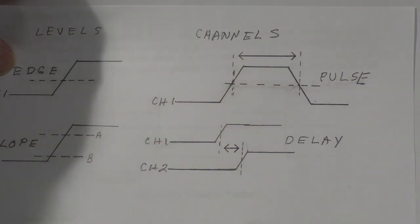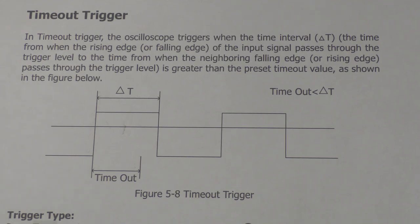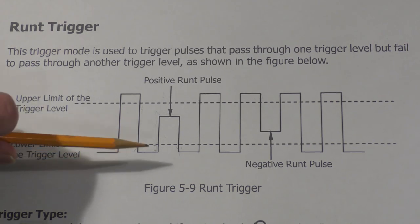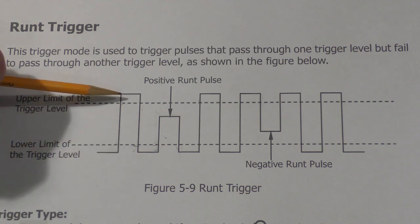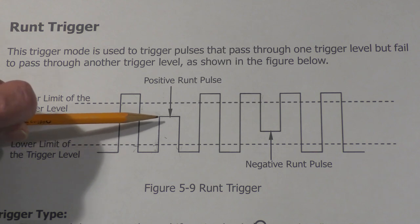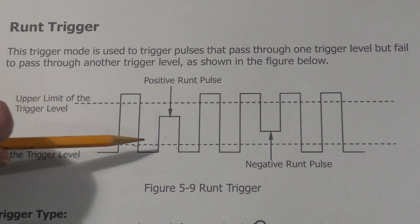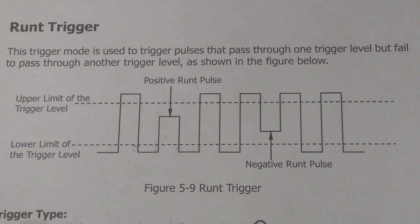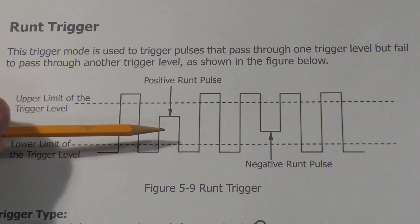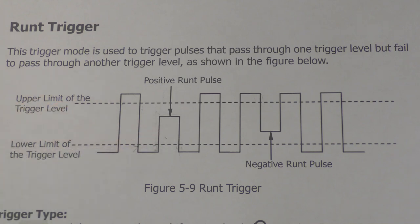So now let's look at the runt trigger. Whenever a pulse that's supposed to go all the way to a high level and then return, instead only goes part of the way, we call that a runt pulse. And these happen often in systems, especially when you're debugging them, because this can happen because of signal contention.